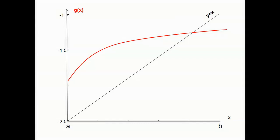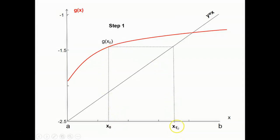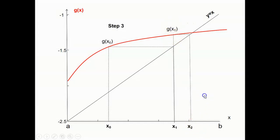Now let's see the graphical interpretation of this method. We start by a point x0, then we get x1 = g(x0), then x2 = g(x1), then x3 = g(x2), etc. As you can see here, we reach the solution in approximately three iterations.